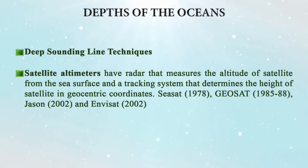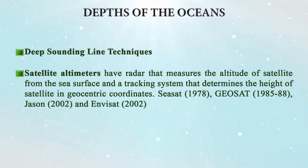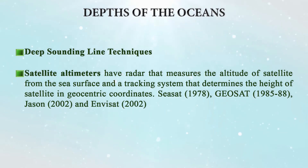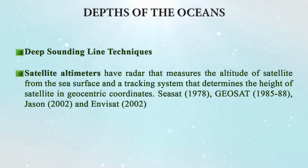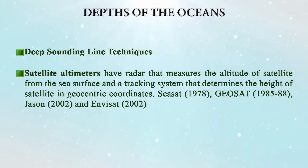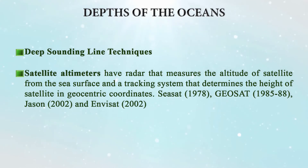Satellite altimeters are also used to map the ocean floor. They have radar that measures the altitude of the satellite from the sea surface, and also a tracking system that determines the height of the satellite in geocentric coordinates. Examples of such altimeters are SeaSat, GeoSat, JASON, and Envisat, which have mapped the ocean floor in the past and continue to do so currently.